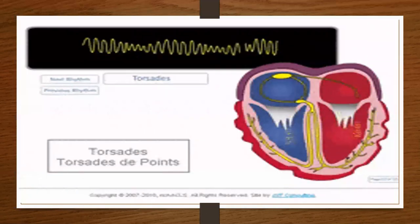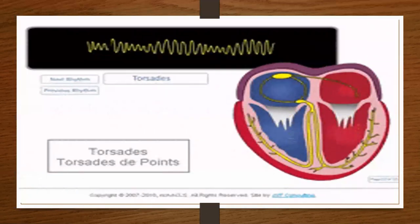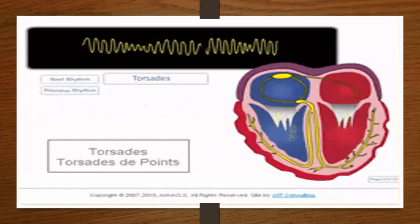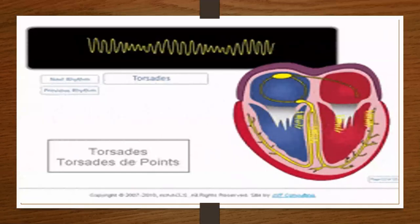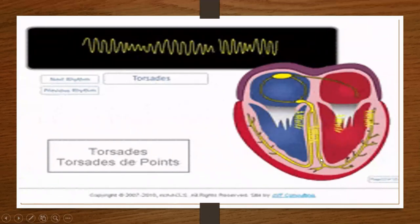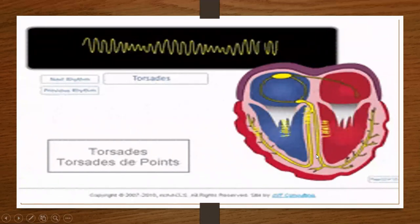Here's another ventricular rhythm called torsades de pointes. We can see here what's happening with this rhythm to your ventricles.